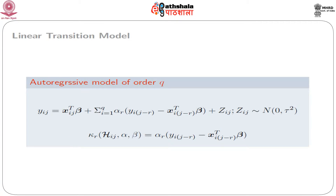Now consider an autoregressive model of order q, AR(q). Here y_{ij} = x_{ij}^T β + Σ_{r=1}^{q} α_r (y_{i,j-r} − x_{i,j-r}^T β) + z_{ij}, where z_{ij} follows Normal(0, τ²). The κ_r function based on previous responses η_{ij} through α and β is α_r · y_{i,j-r} − x_{i,j-r}^T β_r.